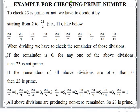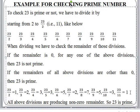For the number 23: 23÷2 gives remainder 1; 23÷3 gives remainder 2; 23÷4 gives remainder 3; 23÷5 gives remainder 3; 23÷6 gives remainder 5; 23÷7 gives remainder 2; 23÷8 gives remainder 7; 23÷9 gives remainder 5; 23÷10 gives remainder 3; 23÷11 gives remainder 1. All divisions produce a non-zero remainder, so 23 is prime.